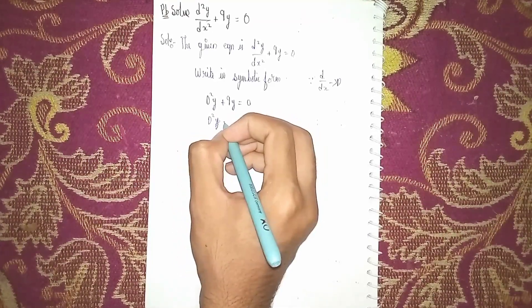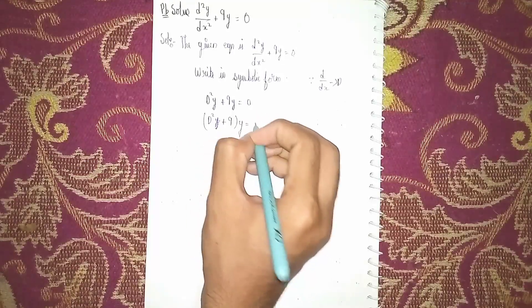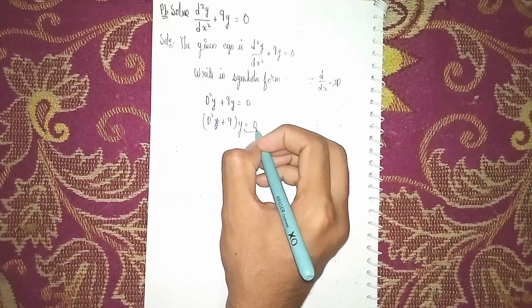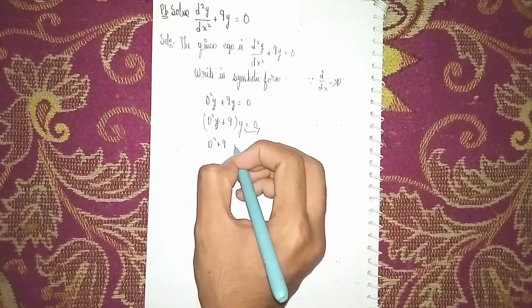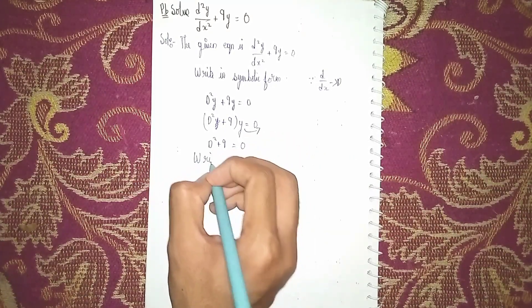D² + 9 into y = 0. I have taken y here as common. Now sending y to this side it becomes 0. That's the equation: D² + 9 = 0. Now write in auxiliary form.